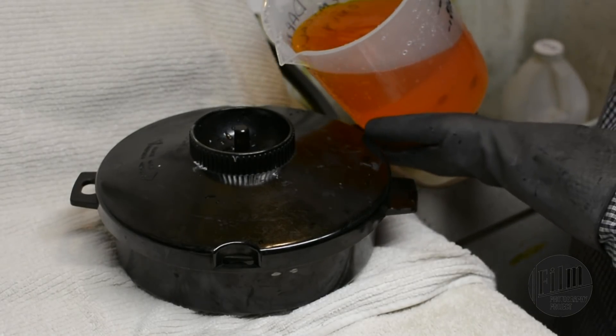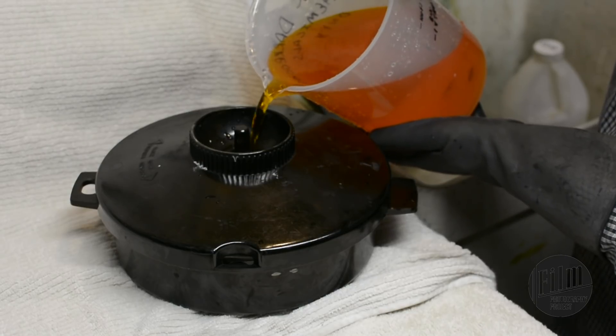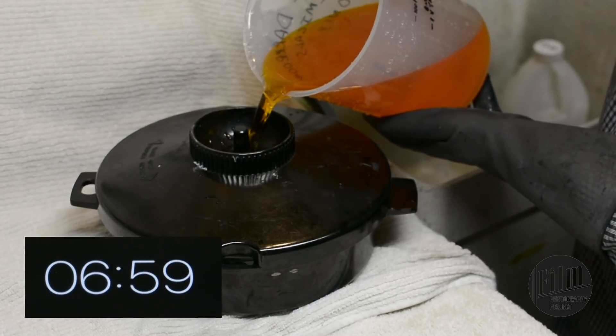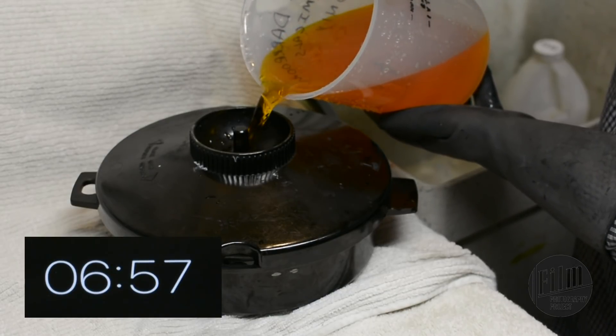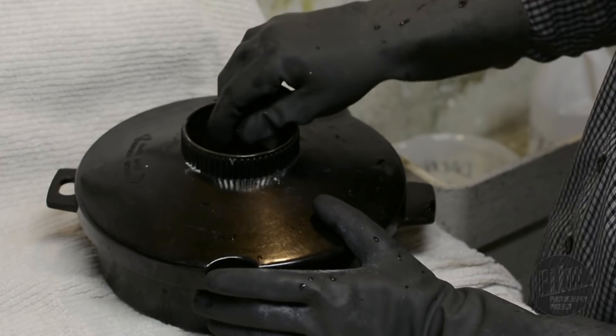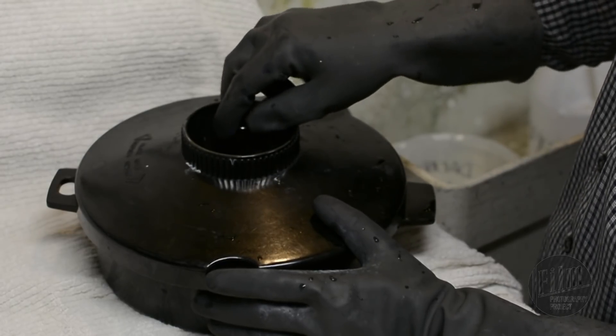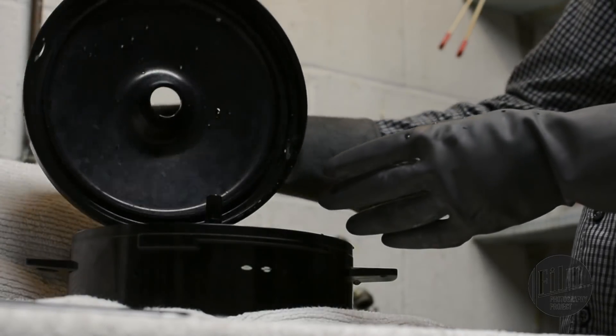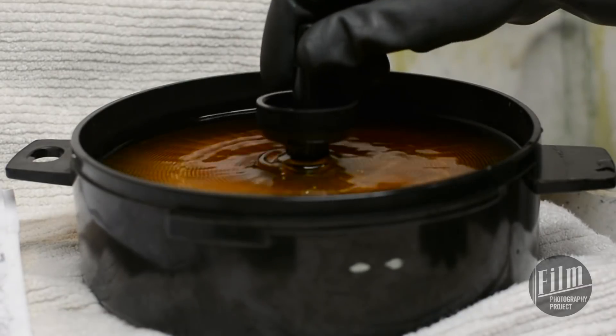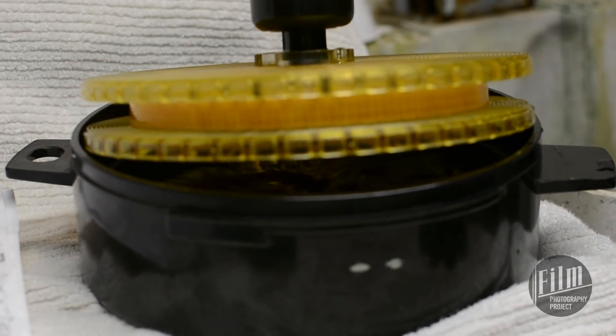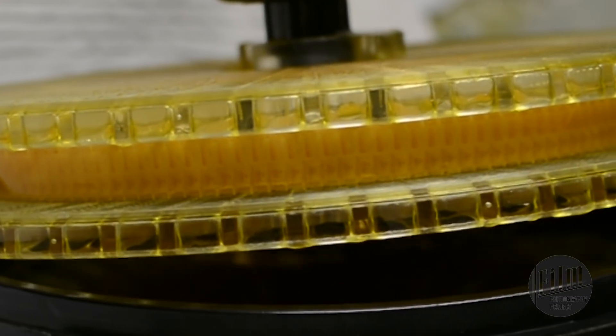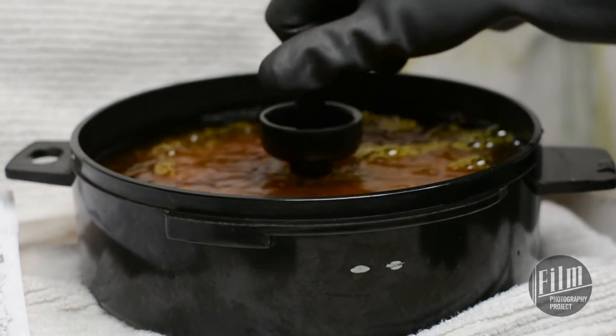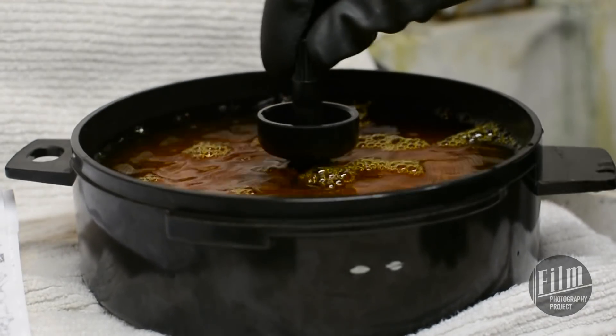Now we have to bleach. This stuff is nasty, so make sure you have your gloves and your goggles on. Add it to the tank and start the timer for 7 minutes. In this step, you need to agitate constantly. After about a minute and a half, you can take the lid off the tank. Carefully lift the reel out of the tank and inspect the film. You're looking for faint yellow images on a clear film base. Carefully put the reel back into the tank and keep agitating until the 7 minutes are up.